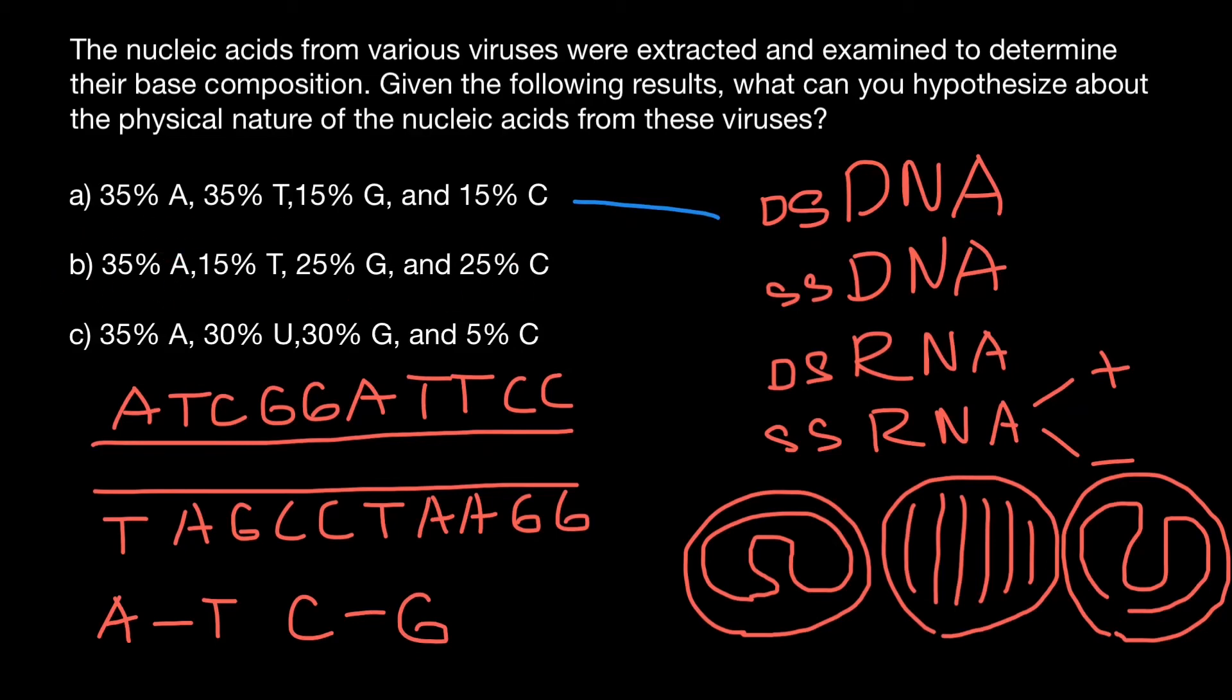Let's now take a look at this virus. 35% adenine, 15% thymine. We know that adenine base pairs with thymine, and the numbers should equal in double-stranded DNA. Take a look: 1A, 2, 3, 4, 5. How many thymines we have? 1, 2, 3, 4, 5. These numbers are equal, but here these numbers are not equal. So we can say that this is going to be DNA-based virus, but it's going to be single-stranded DNA virus.